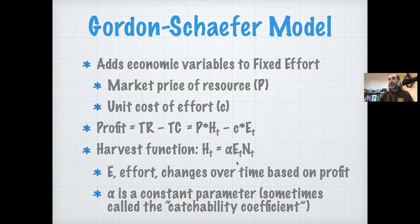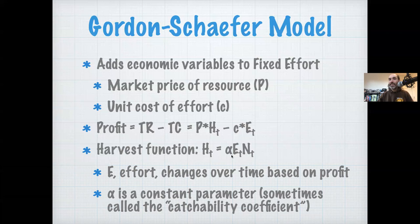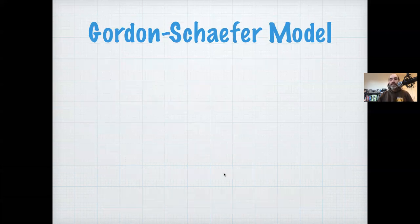If effort is measured in man hours, alpha represents how efficiently the system translates human effort into fish caught. This is sometimes called the catchability coefficient. It's probably the hardest parameter to nail down because it clearly varies as technology changes — it's not a simple calculation.